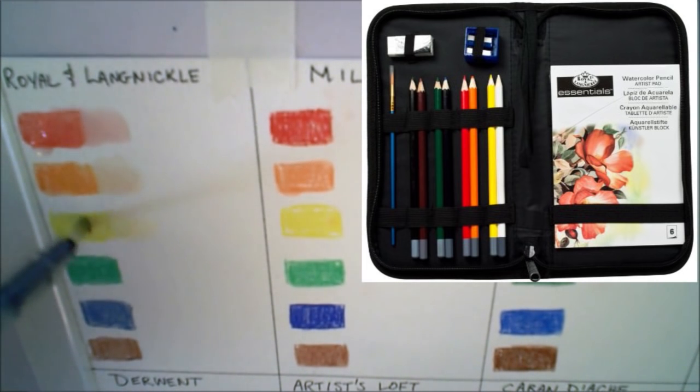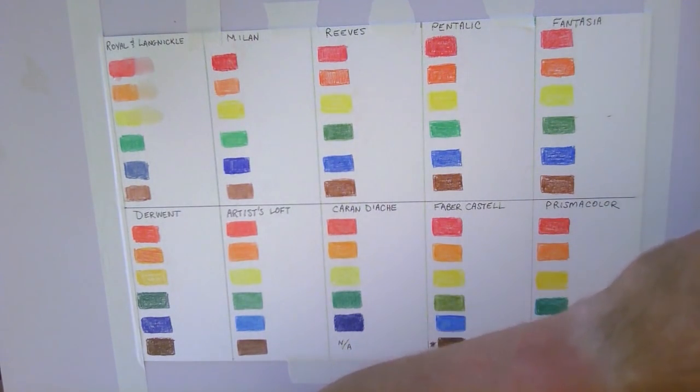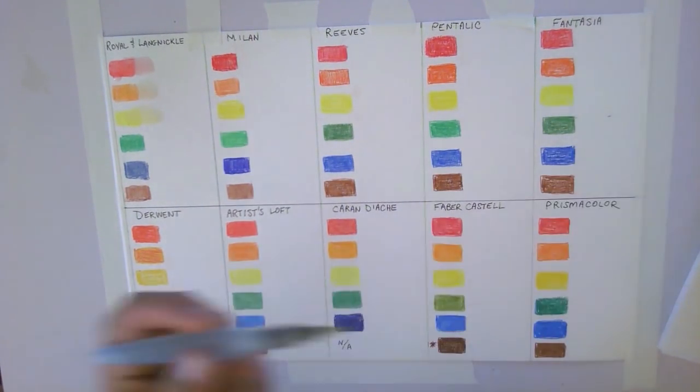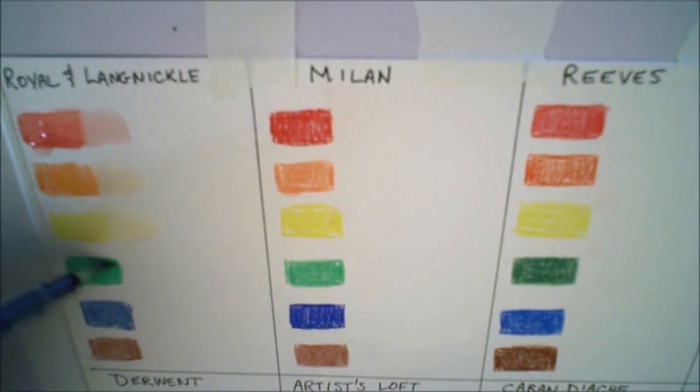Also included are an eraser, a paint brush, a two size pencil sharpener, and a six page watercolor pad. I could not find a weight on the paper of the package. I never used the pad itself, and I had purchased a separate sketchbook of my own. I don't know why they included a two size pencil sharpener for a single size set of pencils, but it is a handy tool to have.